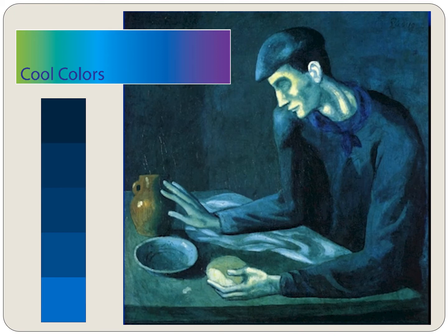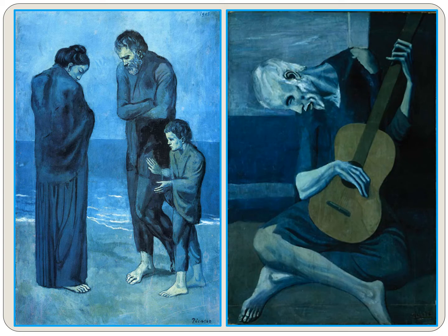Blue is a cool color. Let's look at other portraits Picasso painted during his blue period. We can tell that these are blue period paintings because we see a lot of the color blue. The people look sad and their heads hang down. Also, the man is blind. After just four years of painting these sad-looking pictures in blue, Picasso changed to a new way of painting.